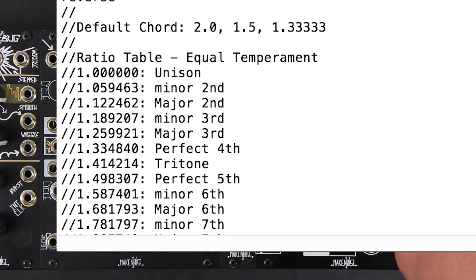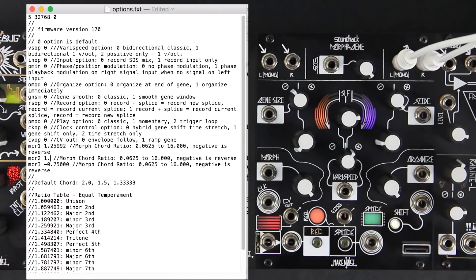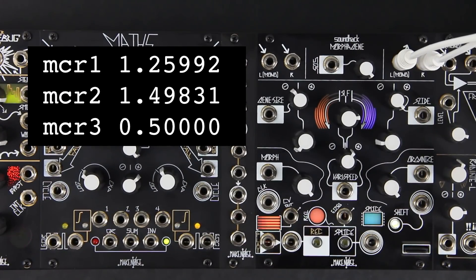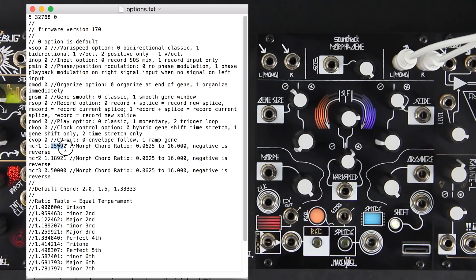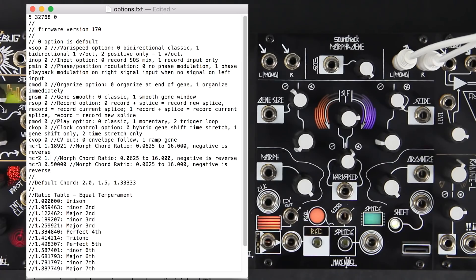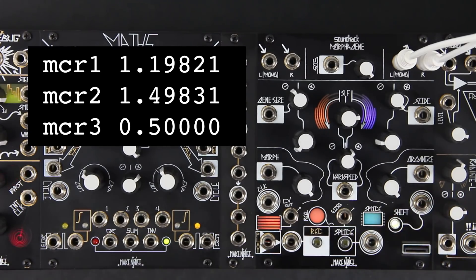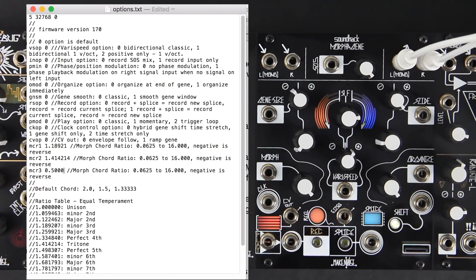There is an equal temperament ratio table provided in comments at the bottom of the text file if you want to create equal temperament chords. For example, here is a major chord. A minor chord. A diminished seventh.